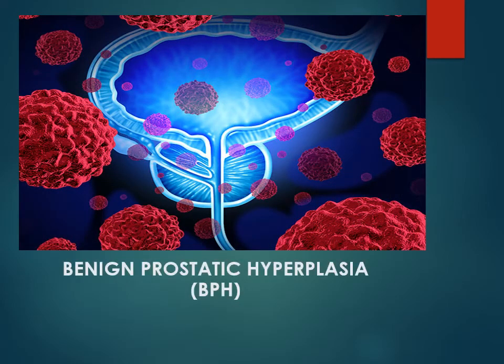Welcome to this talk on benign prostatic hyperplasia, or BPH. As the name suggests, BPH is due to a benign hyperplasia of the cells and tissues of the prostate gland. It is a common disease in men above 50 years of age, caused by enlargement of the prostate gland which causes obstruction of urine outflow from the bladder, causing problems in voiding and storage. It is due to hormonal imbalance that occurs in men of this age.